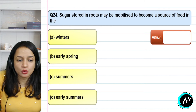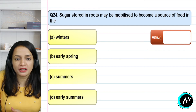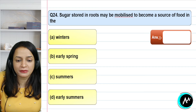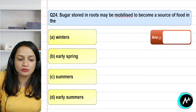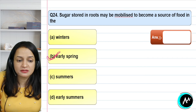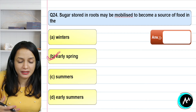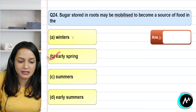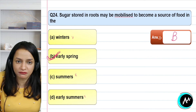Question 24: the sugar stored in roots may be mobilized to become a source of food during what period? Sugar stored in roots is mobilized and sent to sources. A source is something that also produces food, like a leaf. This mobilization is seen in early spring, when trees need to put out new leaves and grow — they require continuous food supply. It does not happen in winter, summer, or early summer — only in early spring. The correct answer for question 24 is option B — early spring.